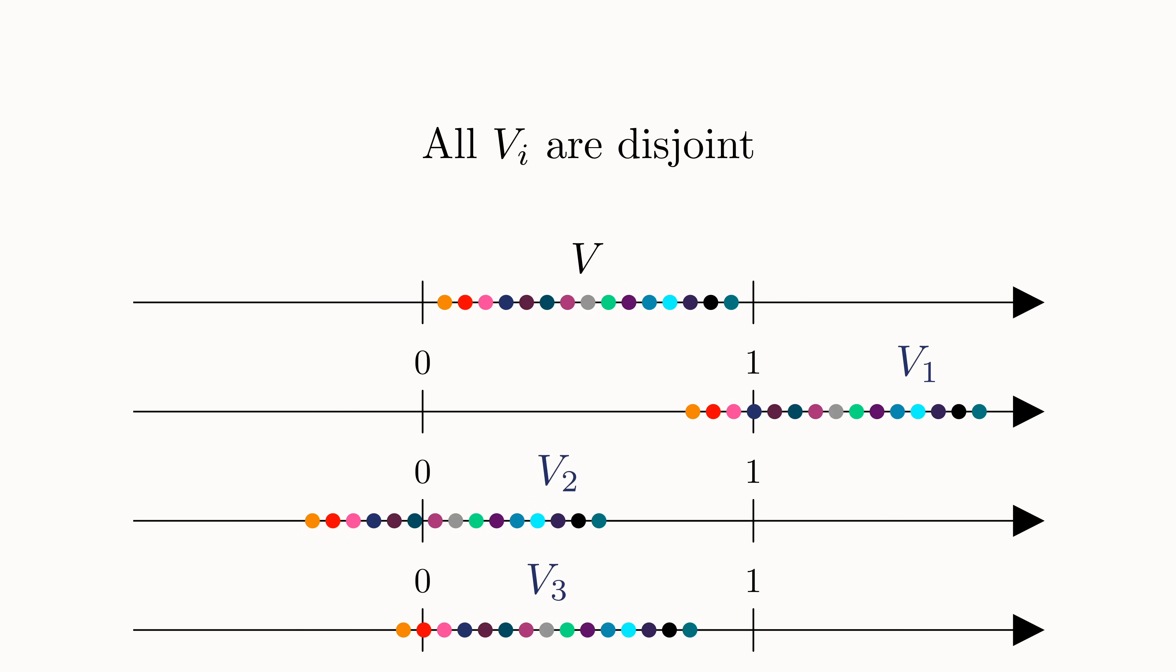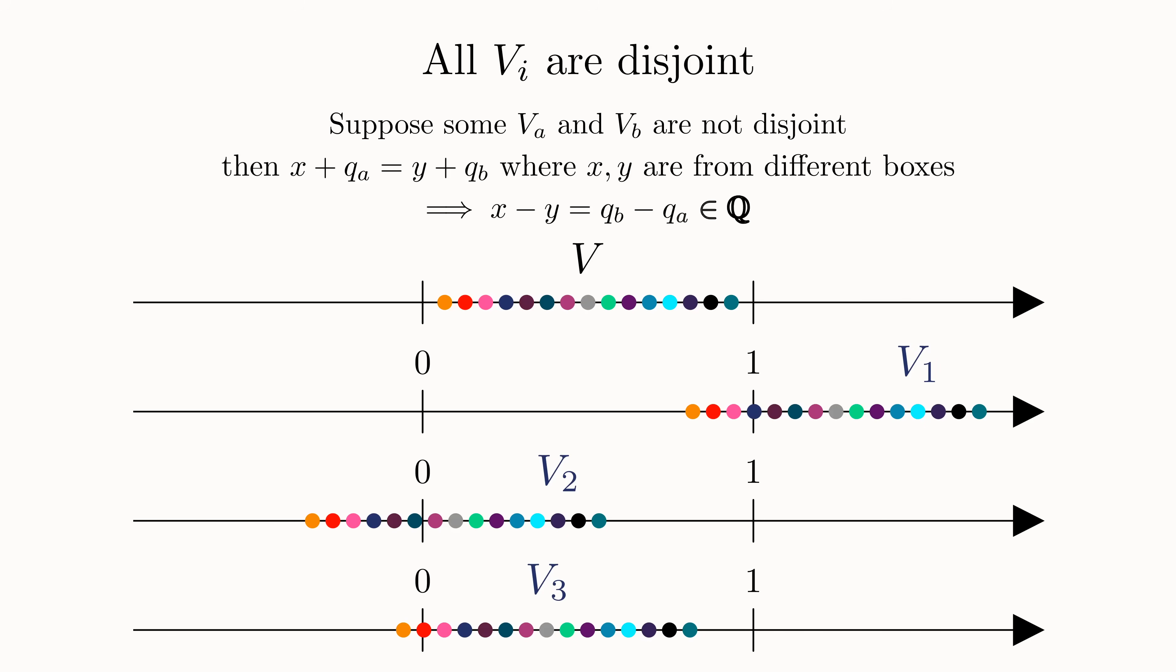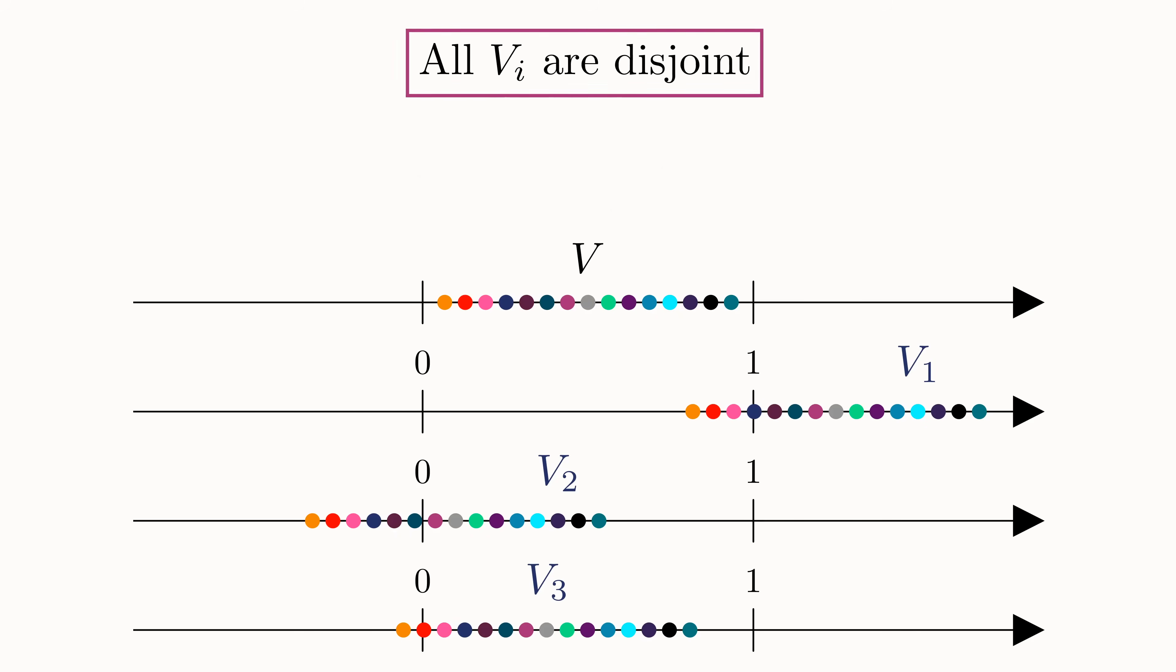The proof of this is quite simple. Suppose there was a point in common. Then some representative in one of these sets will equal another representative in another set, where QA and QB are just some rationals in the list of rationals we just made. But since the difference is a rational, then X and Y must belong to the same box, contradicting our initial assumption that we picked X and Y from two different boxes.